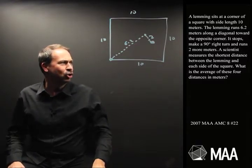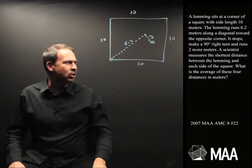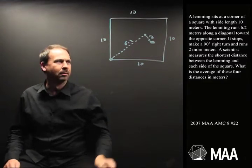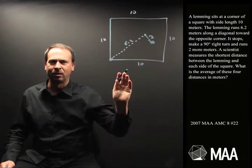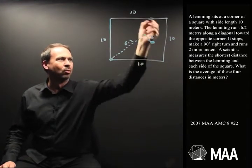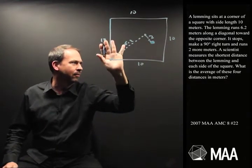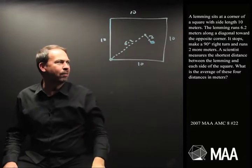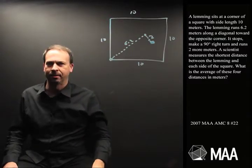A scientist measures the shortest distance between the lemming and each side of the square. So the lemming's right here, measures the shortest distance to all four sides, I guess. I think I've got that right. What is the average of these four distances in metres?